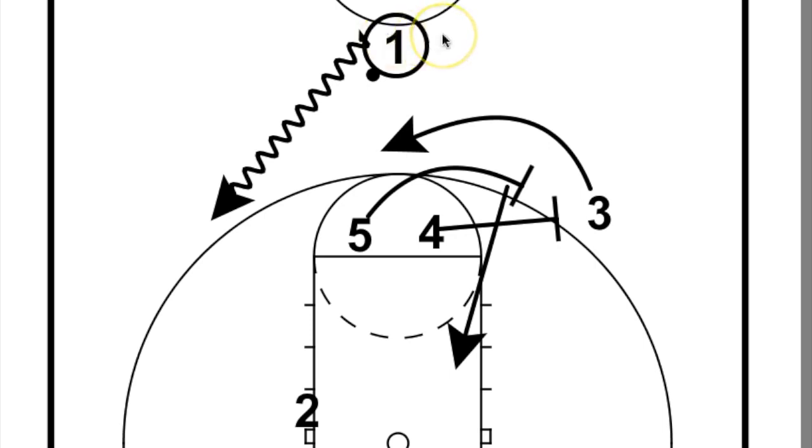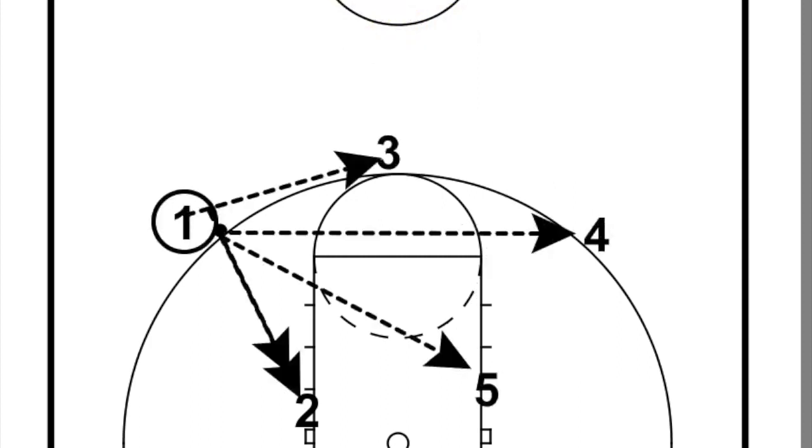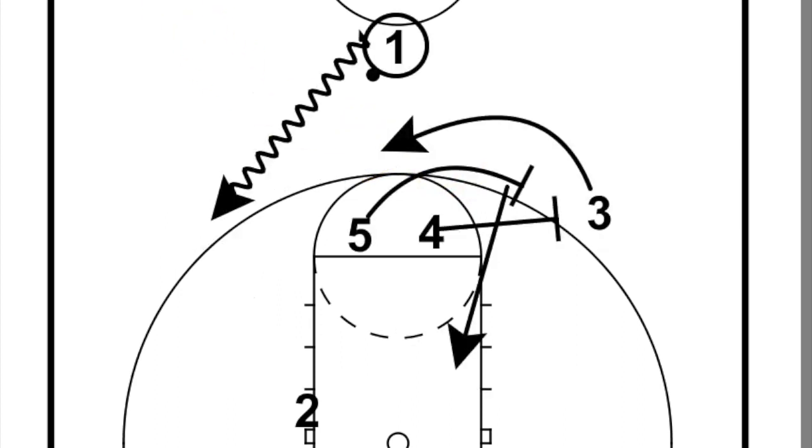So and then as you can see, as that transpires, you're given four different options off that dribble movement atop of the key. Three coming back, you look at the four after he screens, he pops, they might show, he might be wide open, which is a nice opportunity.